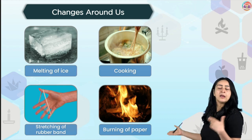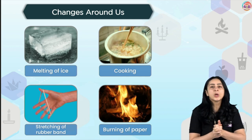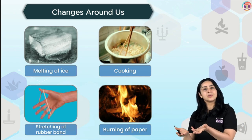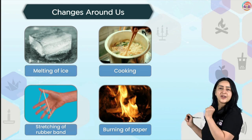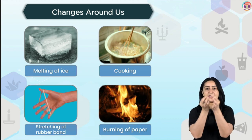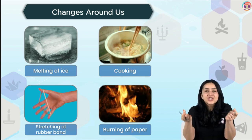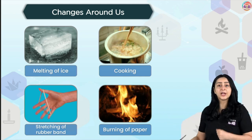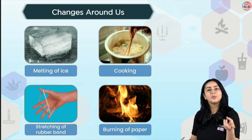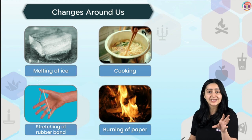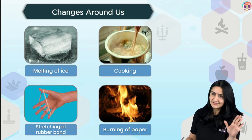There are so many changes that happen around us. Melting of ice means solid ice is melting into liquid. Cooking raw noodles or raw vegetables — something is changing, some properties are changing. Or stretching of a rubber band — its shape is changing. Or burning of paper — when you burn paper, it completely disappears. So a change is basically a process which alters one or more properties of a substance.